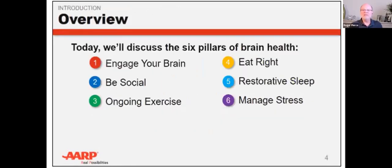The six pillars of brain health are: First, engage your brain — which includes learning new things. Second, be social — staying socially engaged. Third, ongoing exercise — be active and try moving around more often; you don't have to do 100 push-ups or run around a track, just move more. Fourth, eating right — eating a brain-healthy diet. Fifth, restorative sleep — sleeping better to enjoy the restorative benefits of sleep. Sixth, managing stress — addressing the mental and physical effects of stress.